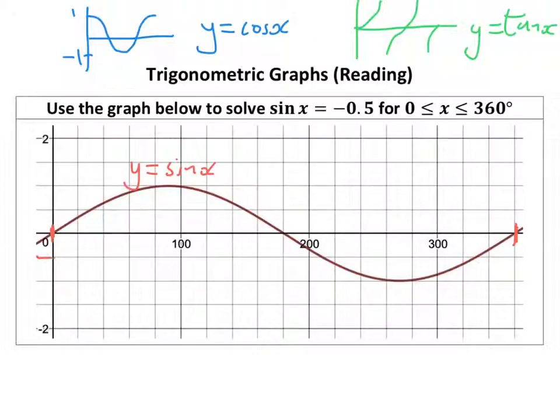So what I'm going to do is draw a horizontal line along minus 0.5. Now, what we're going to be doing is reading down to the x-axis and seeing what angle we get there.